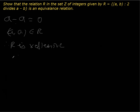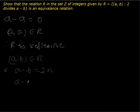Next, to prove symmetric. Let (a, b) belong to R, such that a minus b is divisible by 2. I can write this as 2 times n. Now if I flip the order — instead of a minus b, I write b minus a — clearly if a minus b equals 2n, then b minus a equals minus 2n. Even if it is negative, it is still divisible by 2, so it implies that (b, a) also belongs to R.